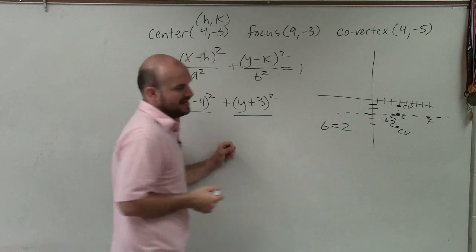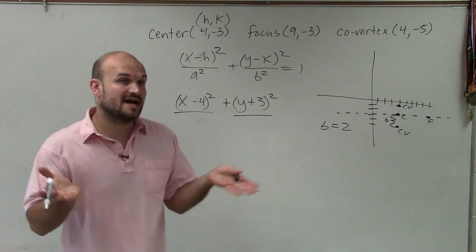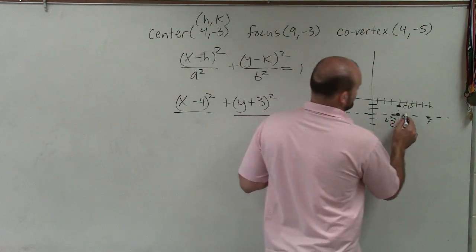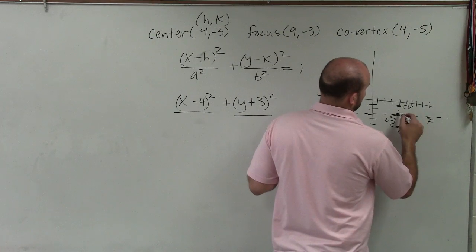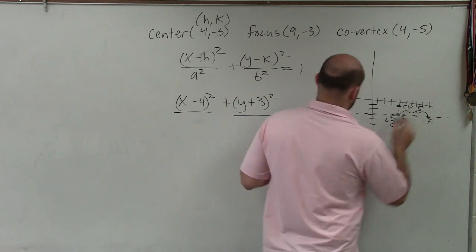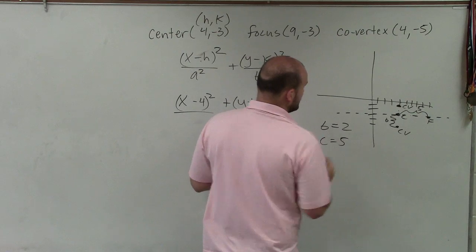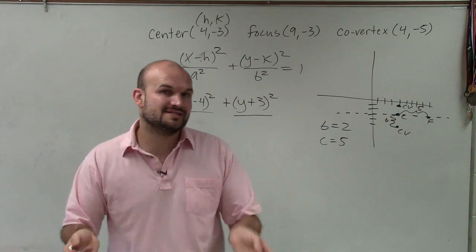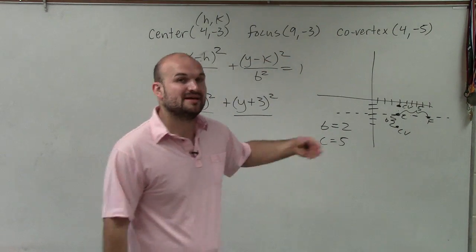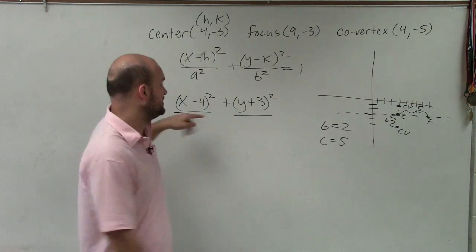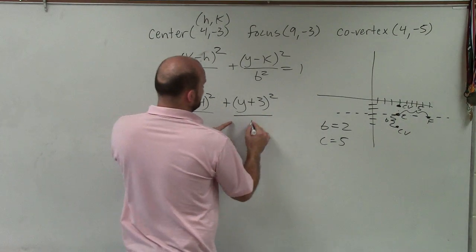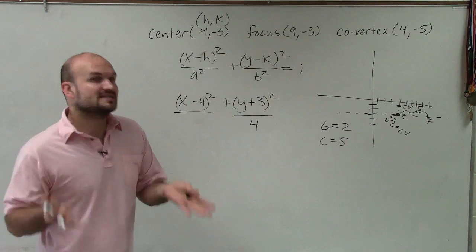Now, we do have a foci. And the distance from the center to the foci is actually c, which is one, two, three, four, five. So we know c is equal to 5. We just don't know what a is. However, there is a relationship between a, b, and c that we can use to solve for a. Because we know b, b squared would be 4. Now we just need to figure out what is a.